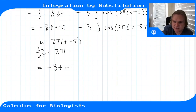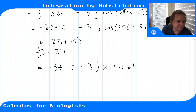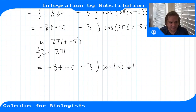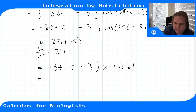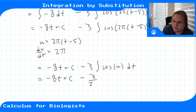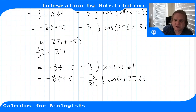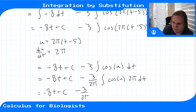We have minus 8t plus C, minus 3 times the integral of cosine of u dt. We can't integrate yet because u and t are different variables. We need to introduce du/dt, so we multiply by 2π and divide by it. That gives minus 8t plus C, minus 3 over 2π times the integral of cosine(u) times 2π dt. Now du/dt is sitting in there, so we can write cosine(u) times du/dt dt.